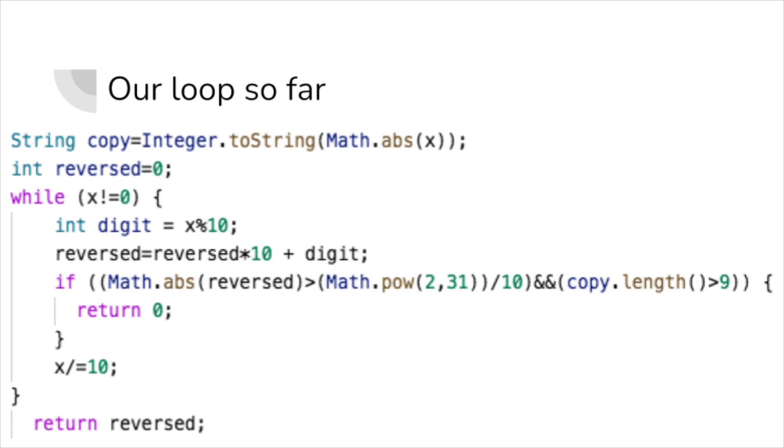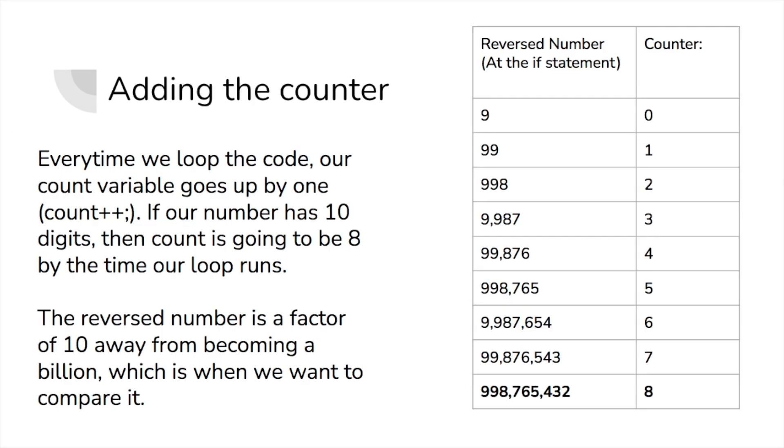Finally, we can add a condition for a counter. To show you what I mean, let's add a count variable to the end of our loop here. Every time the loop goes through, we add 1 to count, and when the reversed number is a factor of 10 away from having 10 digits, the count variable would equal 8, which is why we can add that final condition.